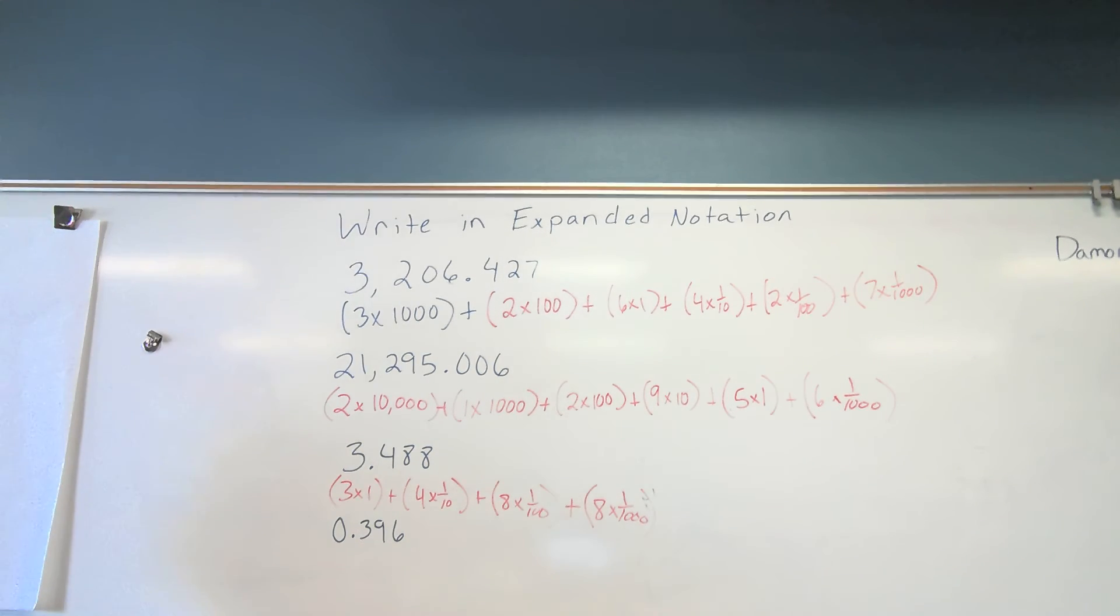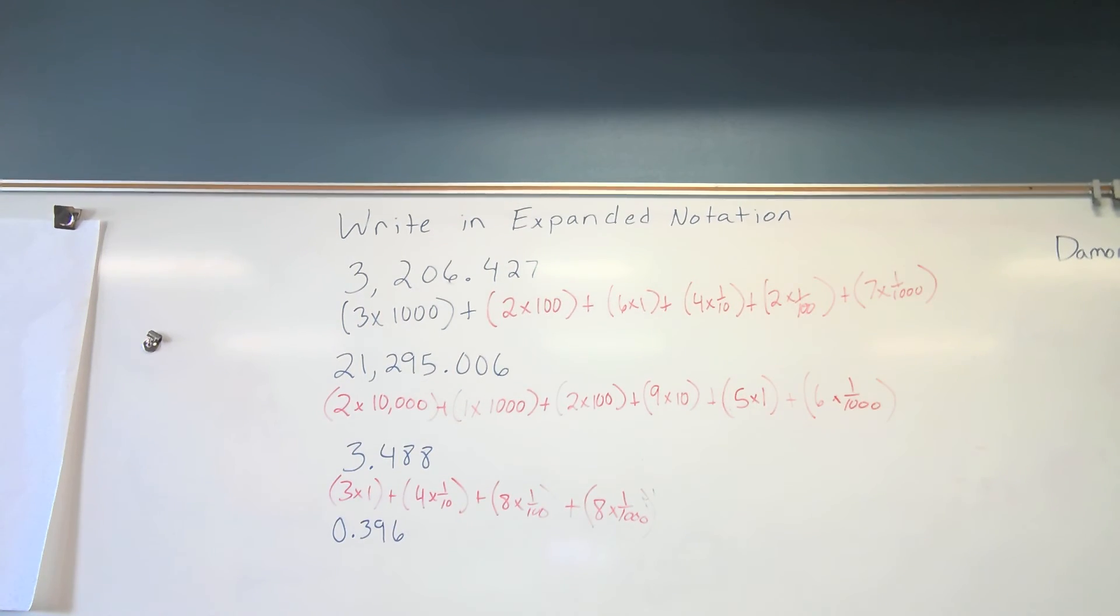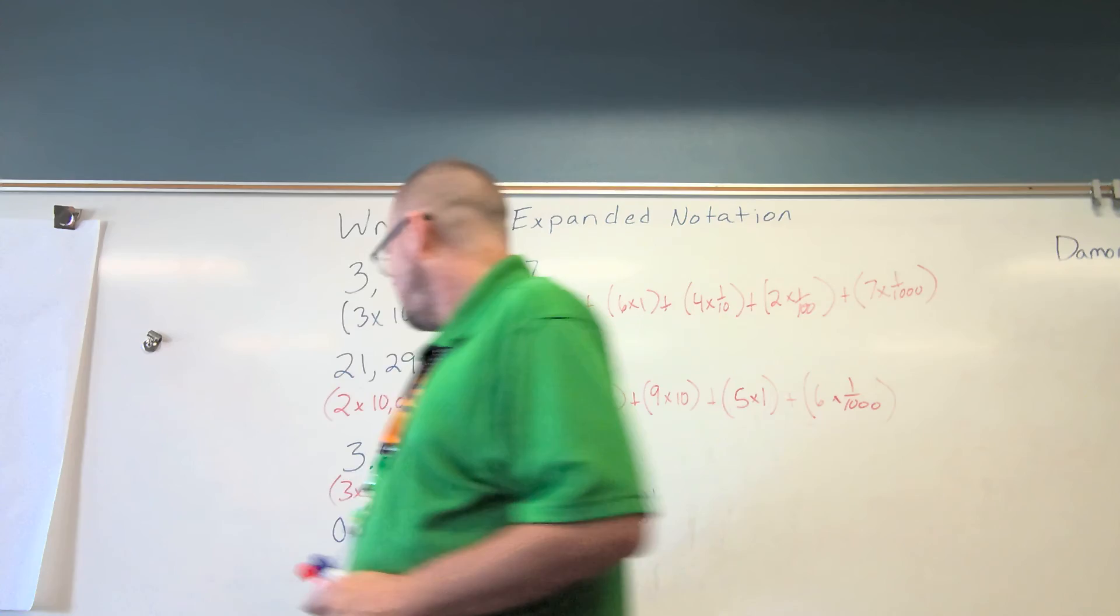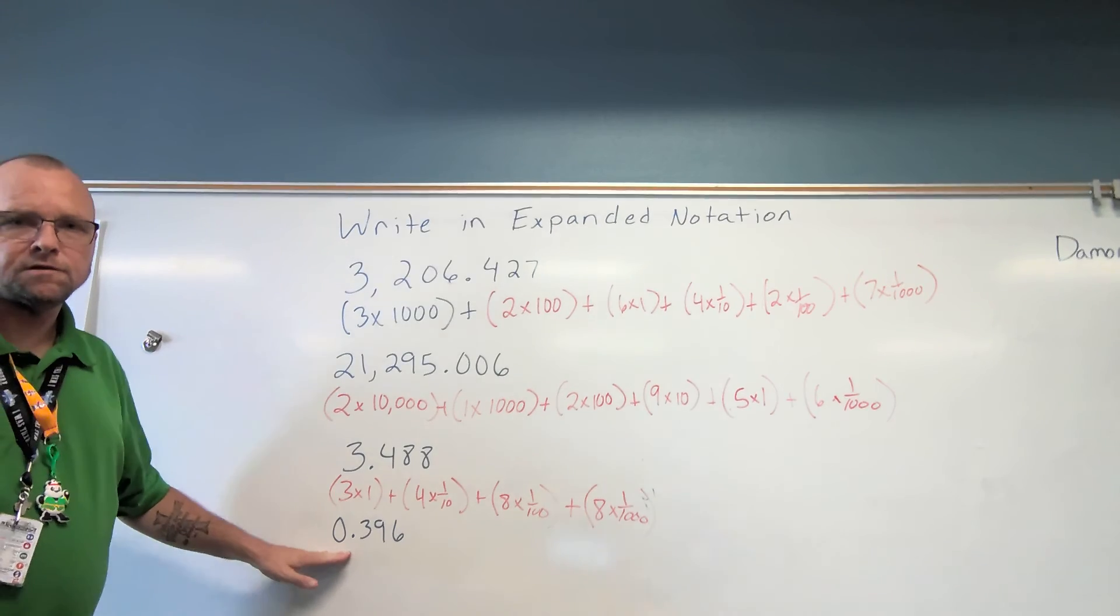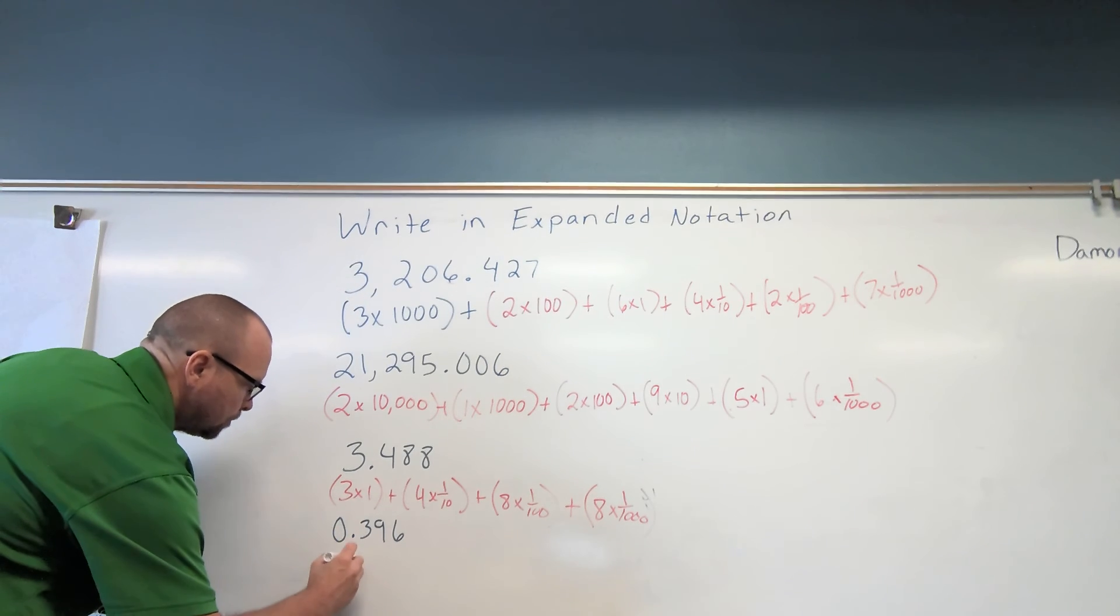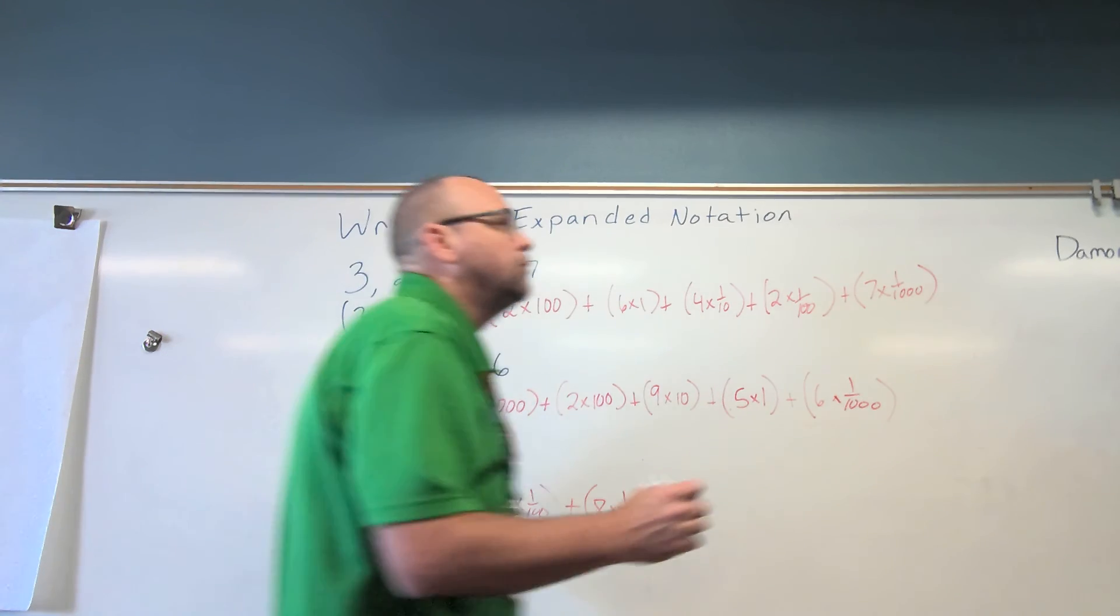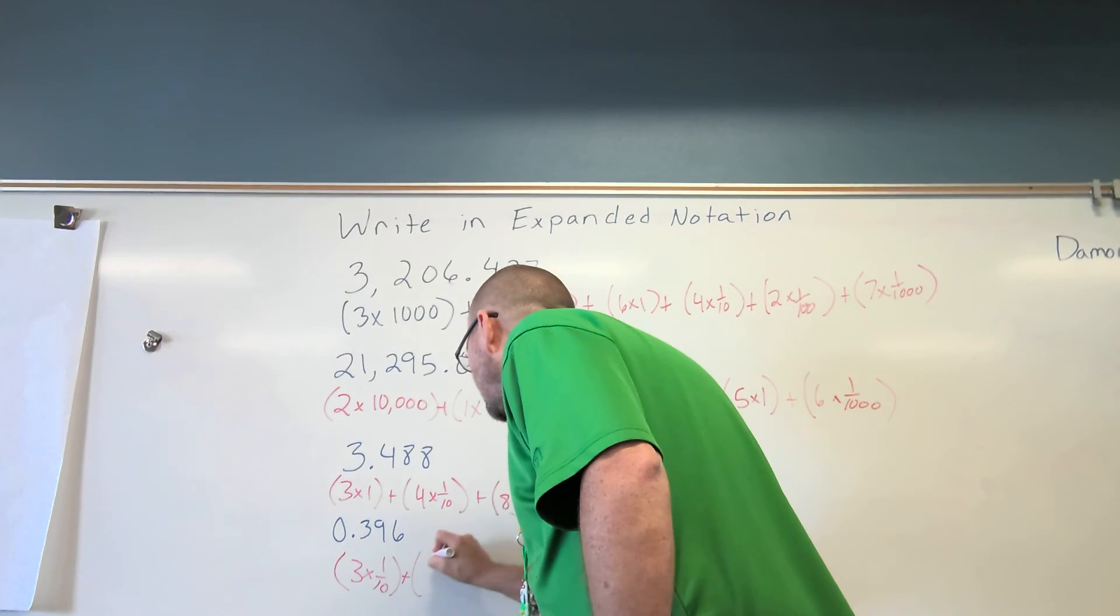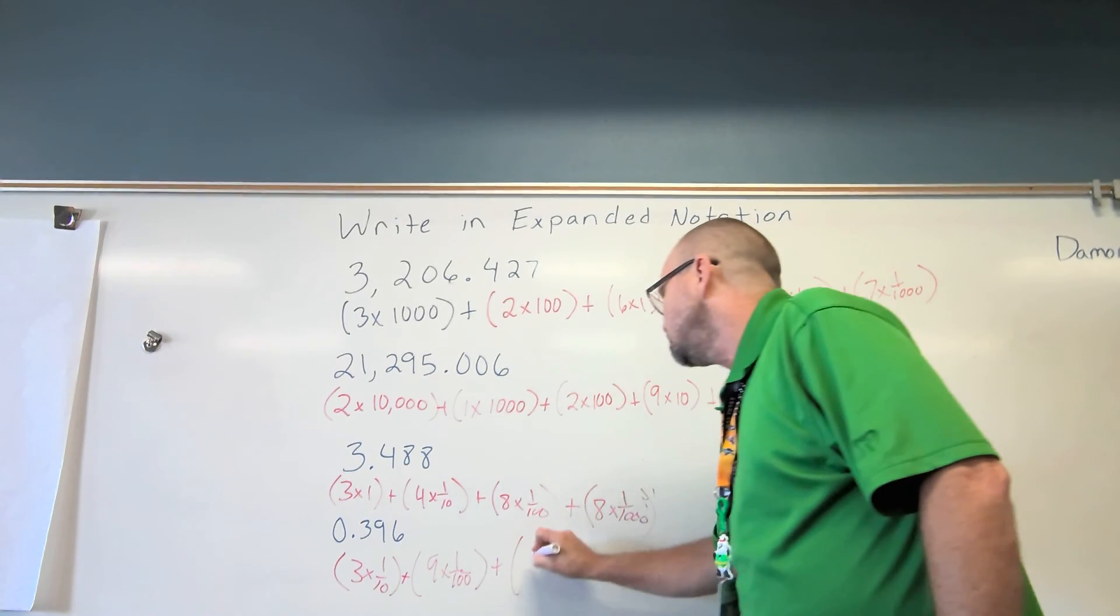If we know our place values, it's just very easy. The last problem for this group, Rylan. Okay? We don't do any zero places. So, we're going to start with our three. Rylan, what place value is the three in? Three-tenths. Three times one-tenth. Plus, Rylan, what place value is the nine in? The hundredth. Plus, nine times one-hundredth. And what place value is the six in? The thousandths.